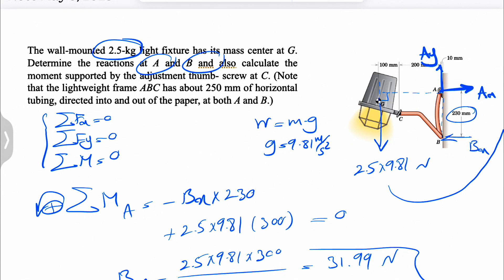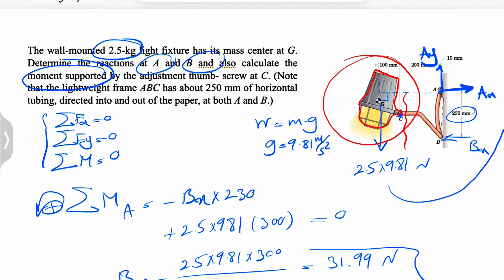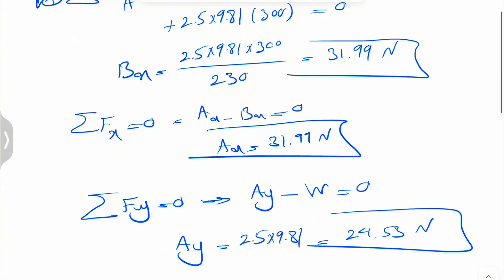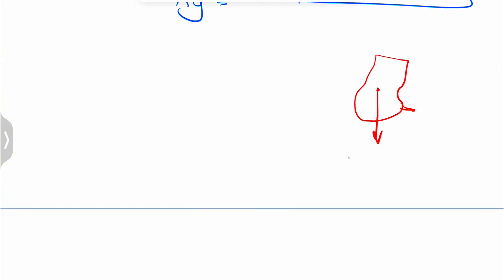But the question is also asking for the moment supported by the adjustment at point C. And for that part, we're just going to consider this part of the light. If we just draw the free body diagram for that part, let's just assume this is our point C.